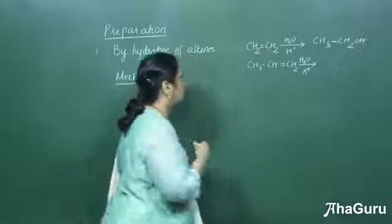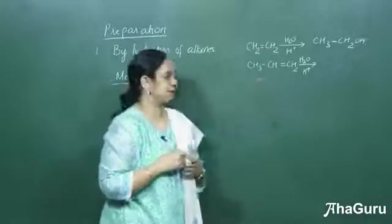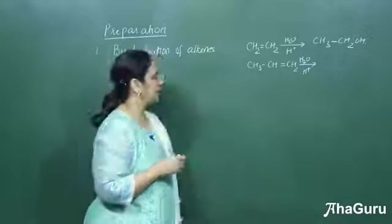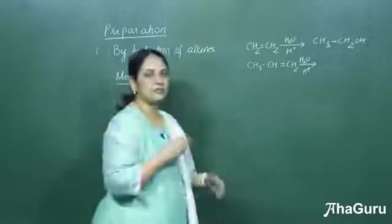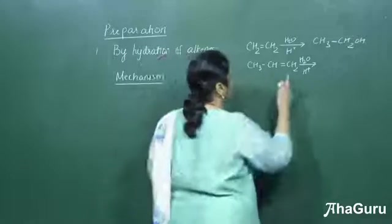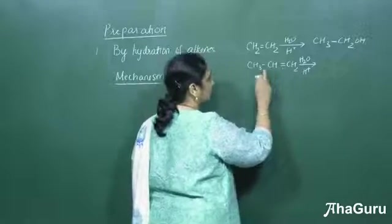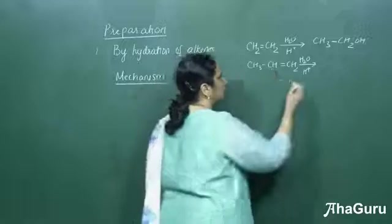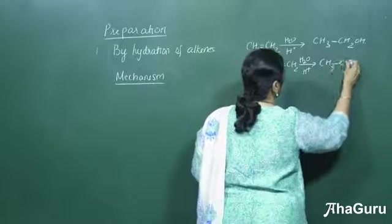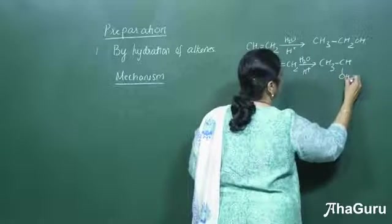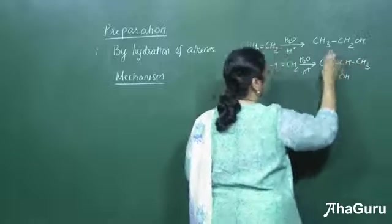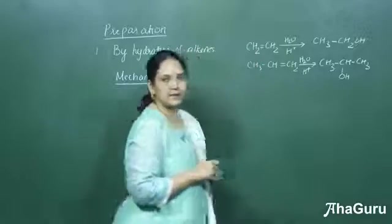Hydration is always catalyzed by acid. Now if we take an unsymmetrical alkene, this will follow Markovnikov's rule, and the OH will get attached to the carbon having the lesser number of hydrogens. So the product would be CH₃CHOHCH₃. The first case gives a primary alcohol and this case gives a secondary alcohol.